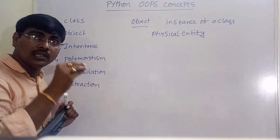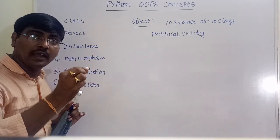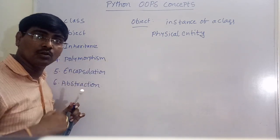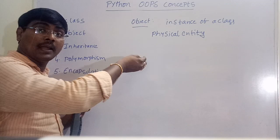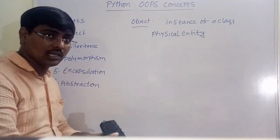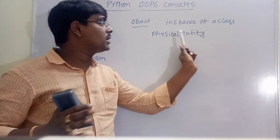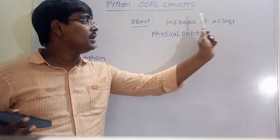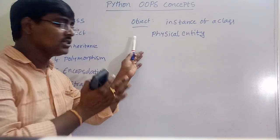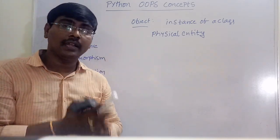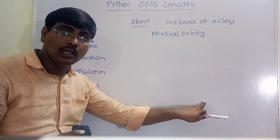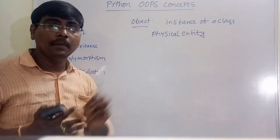For example, if ID equals 1, salary equals 20,000, and name equals XYZ — that employee exists in the real world — that is an object. An object is a physical entity and it is an instance of a class. Whenever we create an object, only then do we allocate memory for the class.